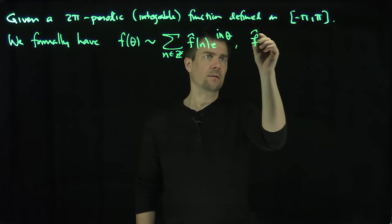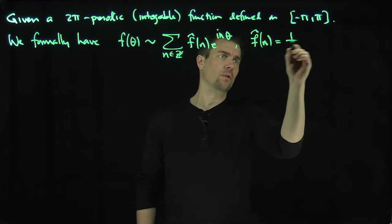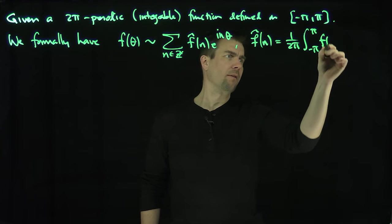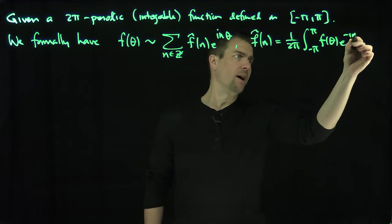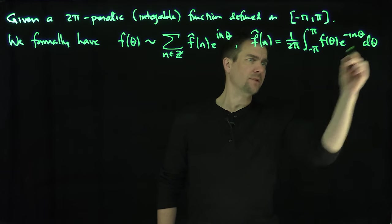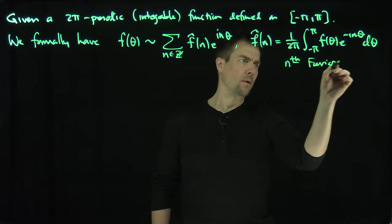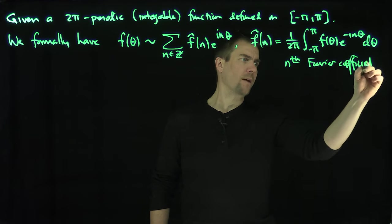And here of course f̂(n) is 1/(2π) times the integral from negative π to π of f(θ)e^(-inθ)dθ. This is the n-th Fourier coefficient.